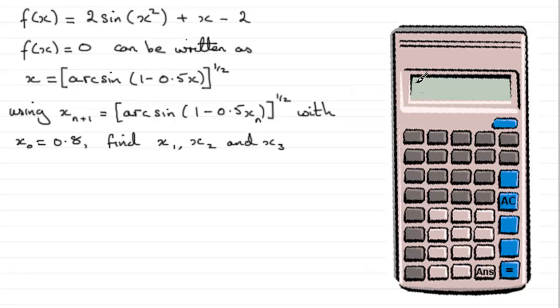and then enter the inverse sine function. So it will come up as sine with a little minus 1 there. Then open up another bracket, and then you've got 1 minus 0.5. At this point, press the ANS button there. Close the bracket, and close the bracket again, and then enter to the power 1/2. It should look something like that. Or in place of 1/2, you might want to press the square root key, because that's what the power 1/2 represents.